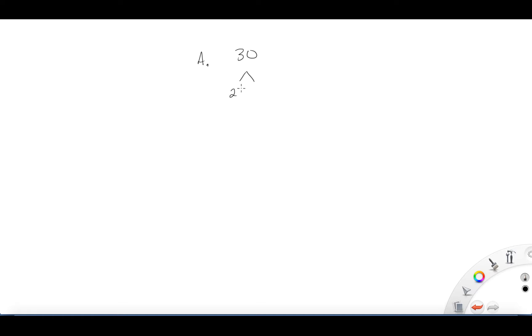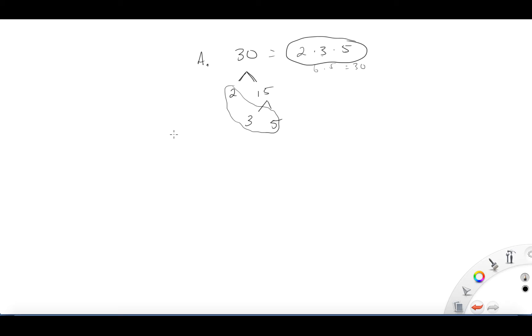Now let's look at prime factorization. I'll use example 4a to teach this. For the number 30: since 30 is even, I divide it by two and get 15. I divide 15 by three and get five. These are the prime factors, so 30 equals two times three times five. We can verify: three times five is 15, times two equals 30 — or two times three is six, times five equals 30.